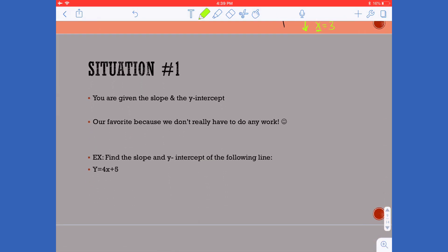Now when trying to write the equation of a line there's three different situations that can occur. The first one is when you're given the slope and the y-intercept and we love this because we really don't need to do any work.